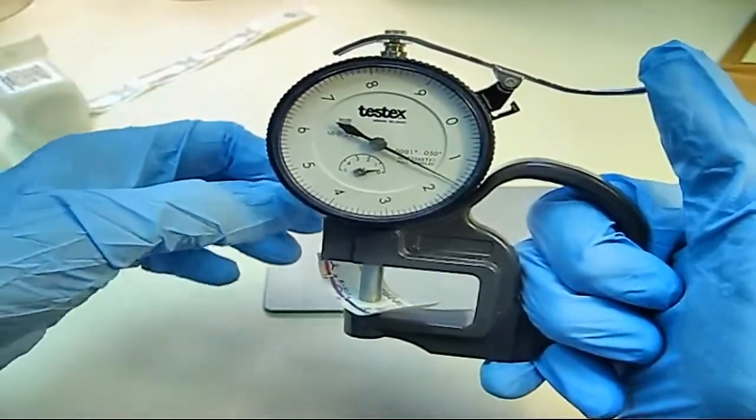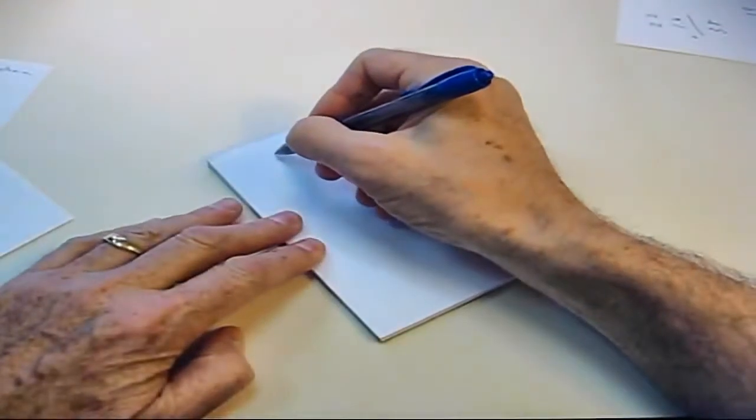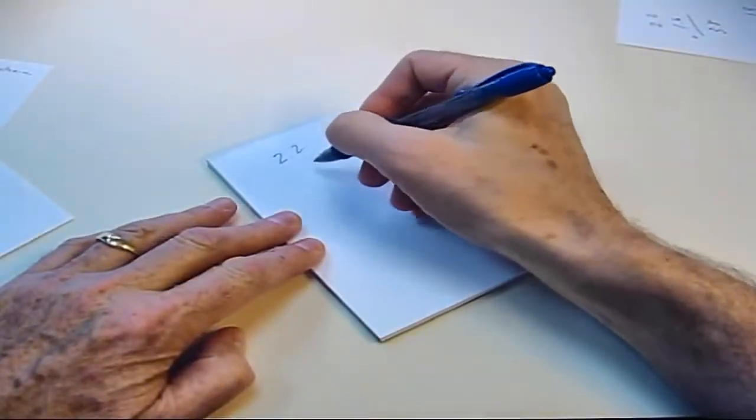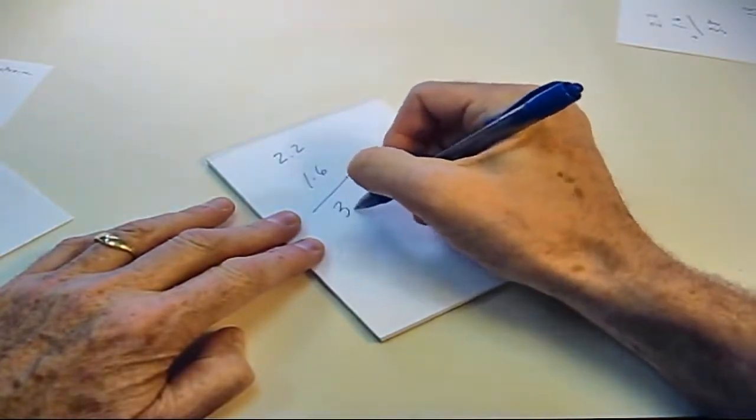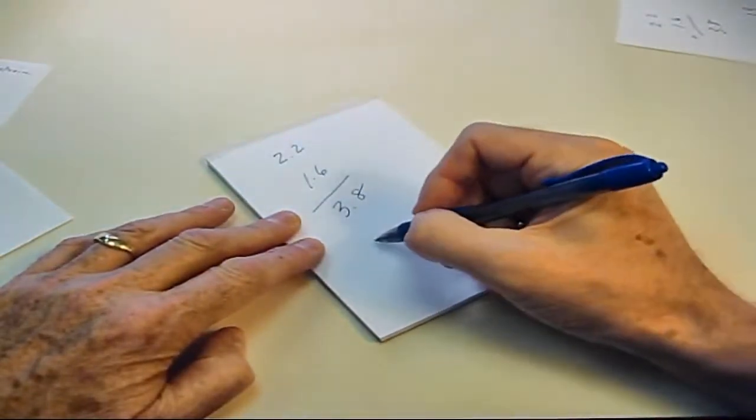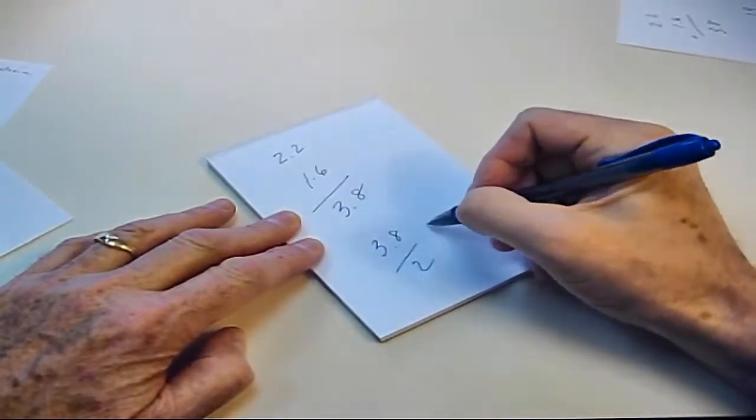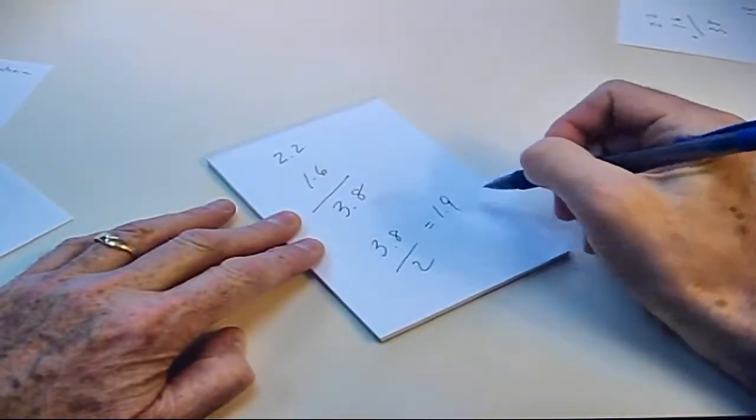Both are within the overlap window, so we will add 2.2 to 1.6 and average by dividing by 2. Adding these numbers gives 3.8, and dividing by 2 gives 1.9. That is our profile. We are done.